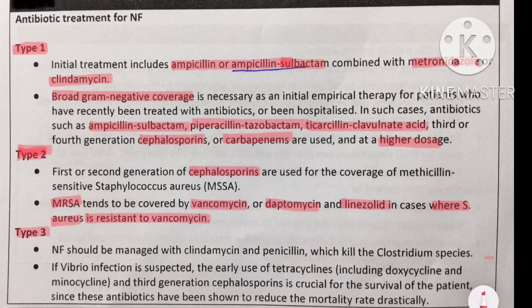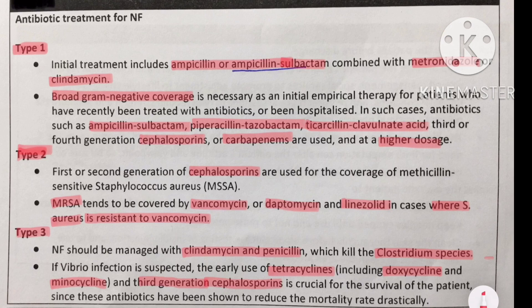For type 3 necrotizing fasciitis, management includes clindamycin and penicillin to kill Clostridium species. If Vibrio infection is suspected, early use of tetracyclines including doxycycline and minocycline, along with third-generation cephalosporins, is crucial for survival as these antibiotics have been shown to drastically reduce mortality. In summary: type 1 uses ampicillin-sulbactam with metronidazole or clindamycin plus broader gram-negative coverage; type 2 uses second-generation cephalosporins or vancomycin/daptomycin/linezolid for MRSA.